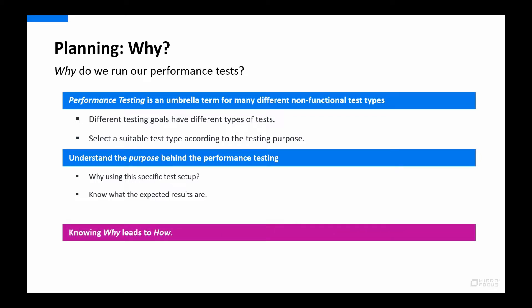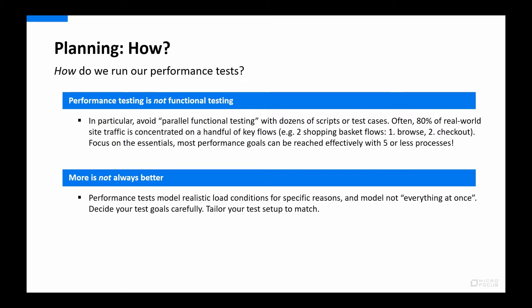Once we know the why, we can proceed to the how. A general rule is that a performance test should reflect realistic load conditions for specific reasons, not just everything at once. Parallel functional testing should be avoided — people often just reuse business processes from functional testing for performance testing, which is not appropriate. Business processes used for scripting should be specifically made for performance testing and reflect real-world usage. Most performance testing goals can be achieved with a handful of business process scripts; we've run tests against large online retail sites with just a small number of scripts.